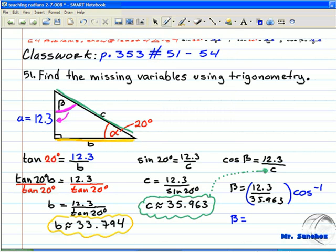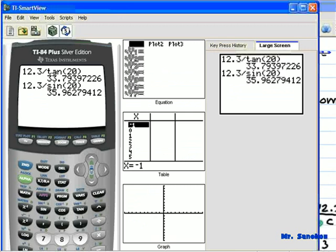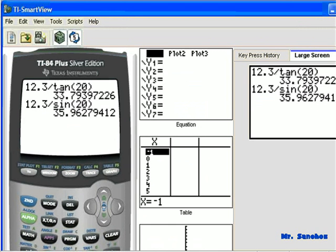Then we're going to use the inverse of cosine to show that the exact answer or the exact value of the beta degree is actually 70 degrees. We can use simple geometry to find that, but using trigonometry, we can just take the last answer to divide 12.3.